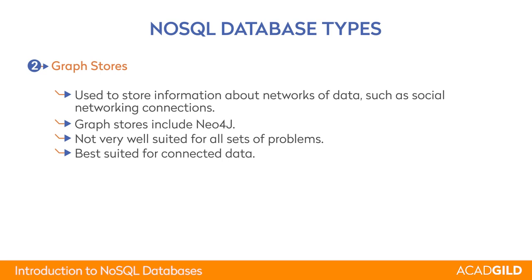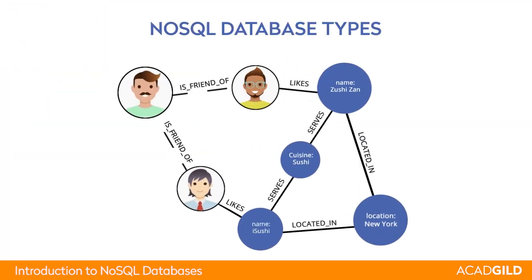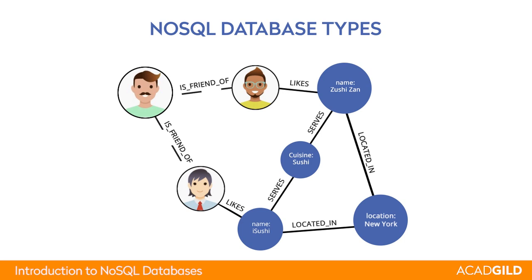A significant example is social media data. A person can be a friend of someone, like something, and post something. His post can get comments — these are relationships between different entities forming a graph. In this graph, every node is an actor or entity, and every edge is like a verb representing a relationship.